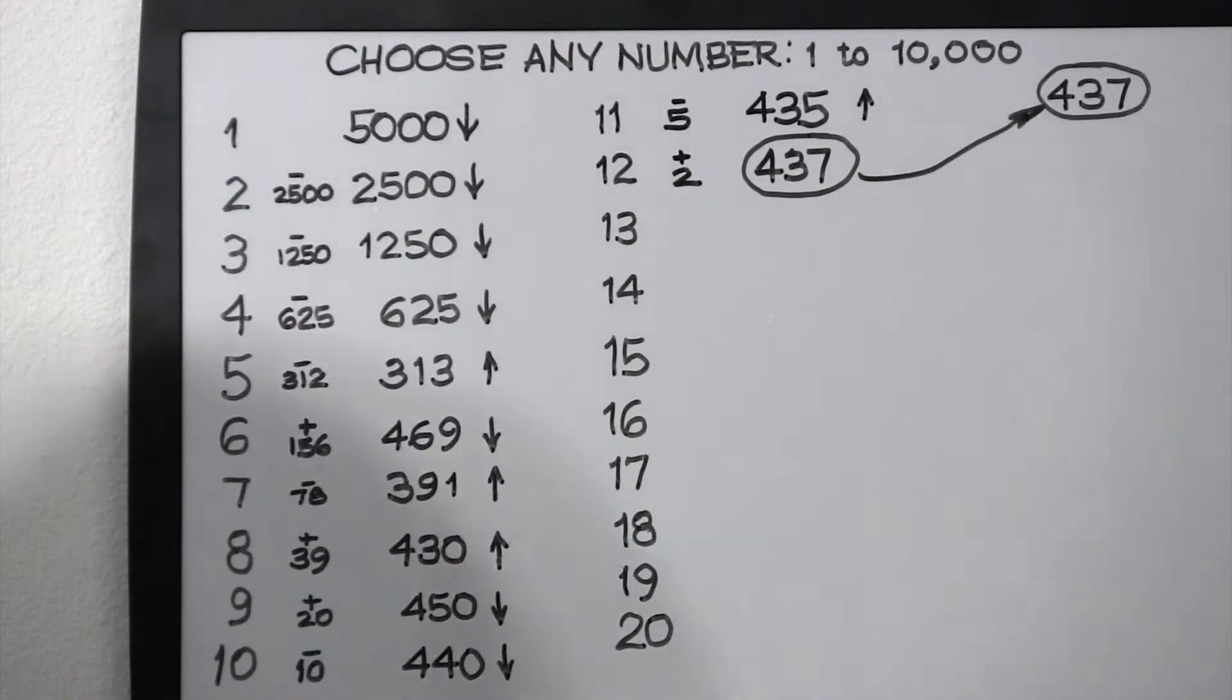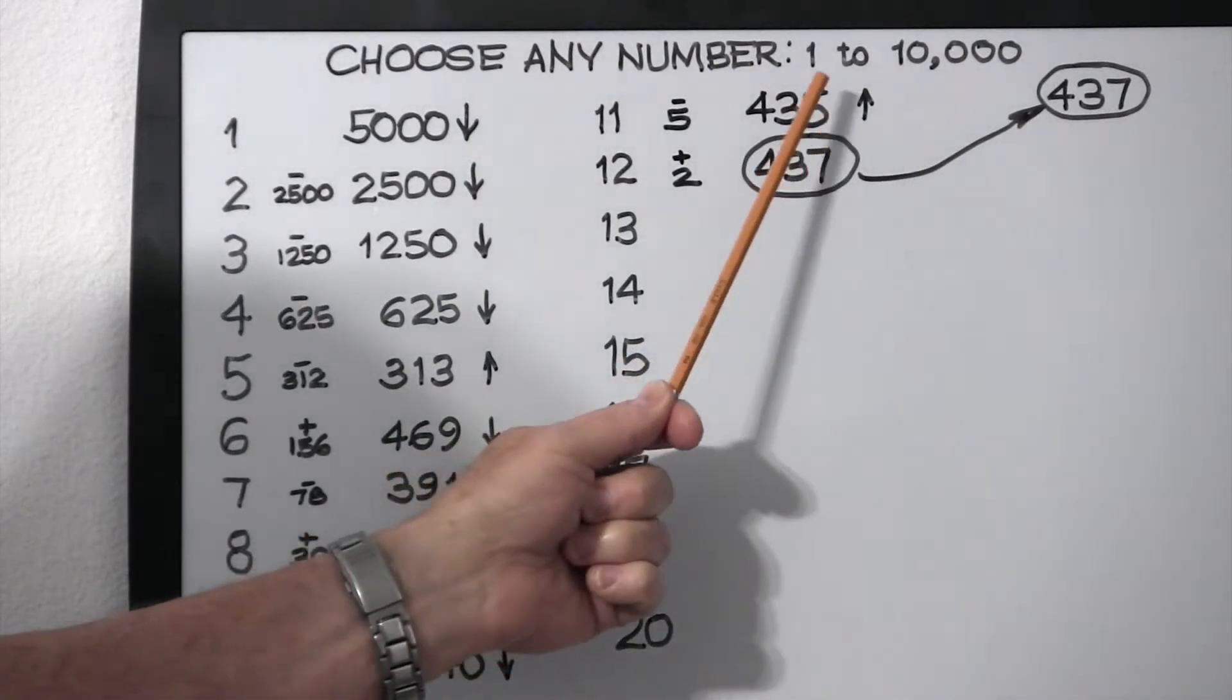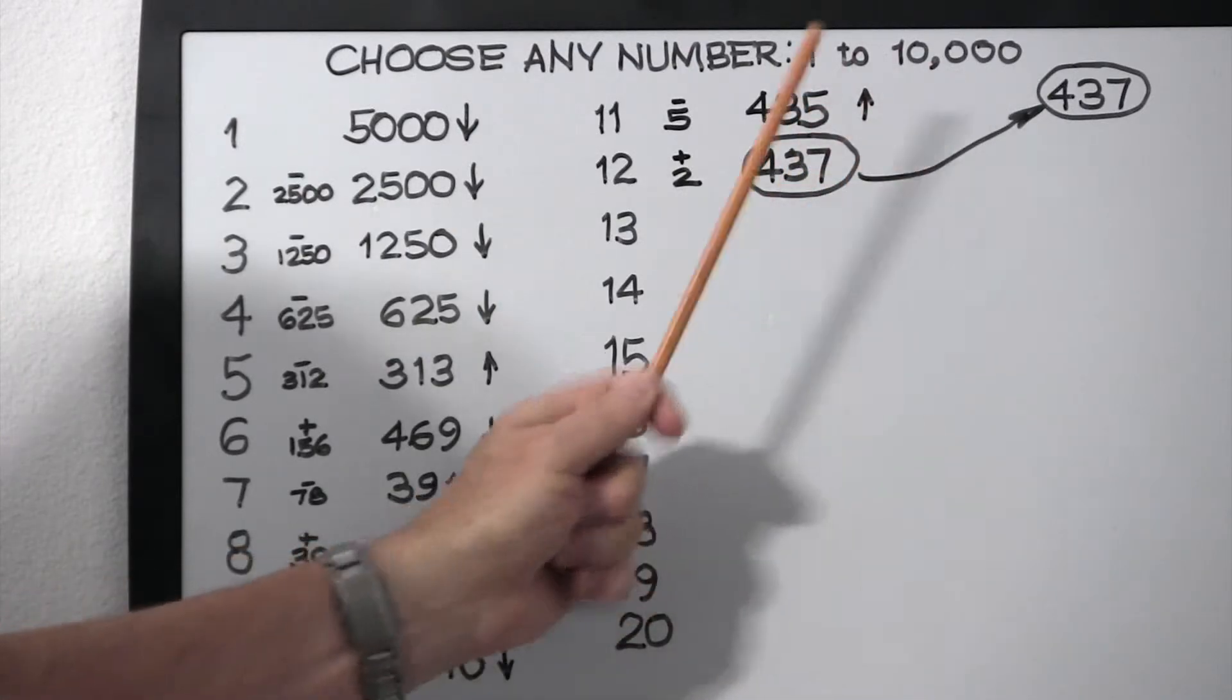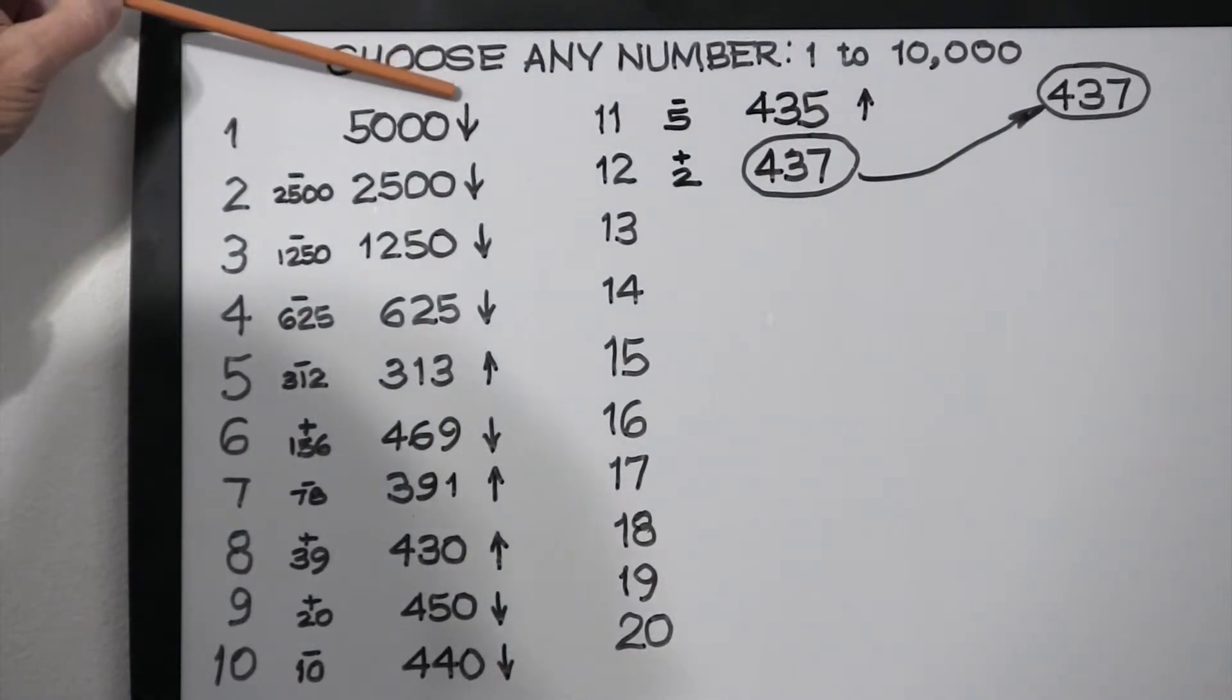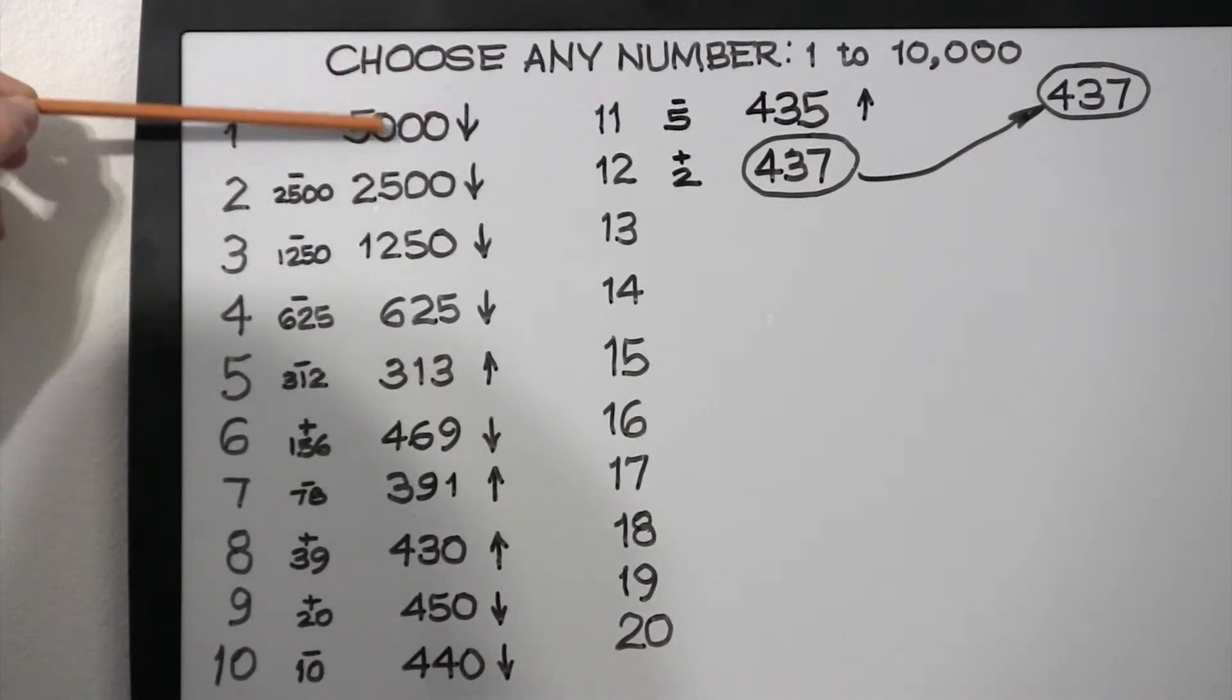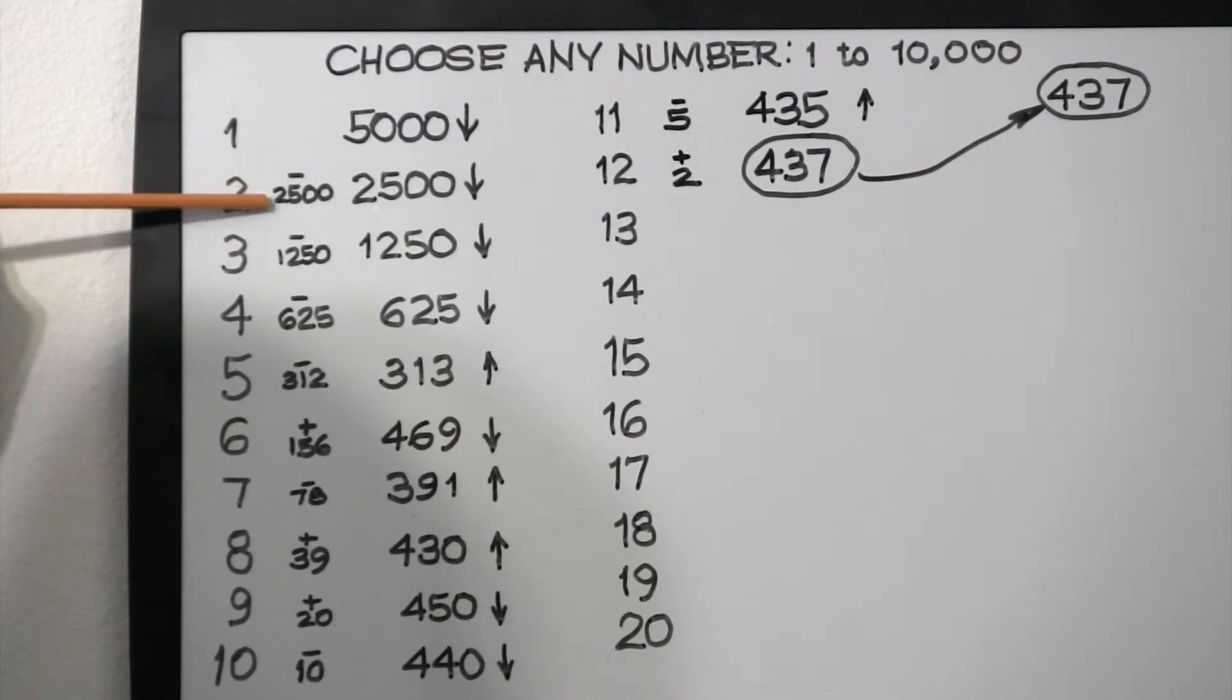Okay, remember, the range of numbers you're working with is cut by half with each guess. So with the range of 1 to 10,000, half of that would be 5,000, so that is your first guess: 5,000. You're then told, no, that's too high, you have to go down. So half of 5,000 is 2,500, so you subtract 2,500, so your guess is 2,500.